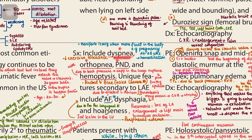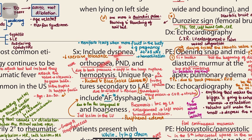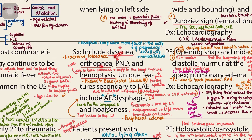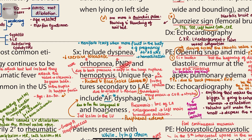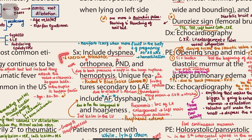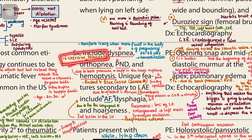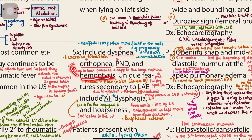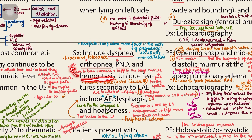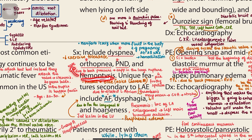Symptoms of mitral stenosis include dyspnea, orthopnea, paroxysmal nocturnal dyspnea, and hemoptysis. Dyspnea, orthopnea, and PND occur because left atrial hypertrophy causes blood to back up into the lungs, causing difficulty breathing with exertion and while lying flat at night. There is also decreased exercise tolerance. Hemoptysis is a rare finding occurring in very severe mitral stenosis.